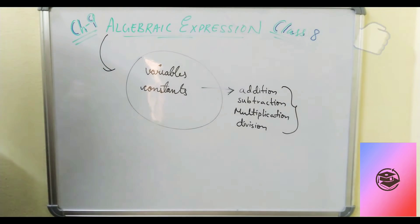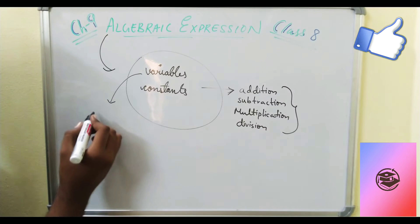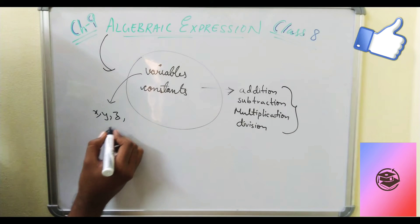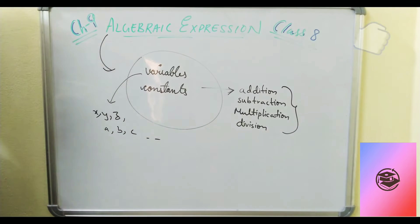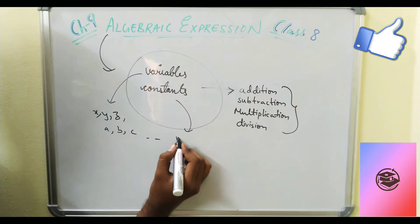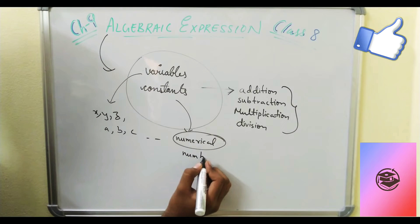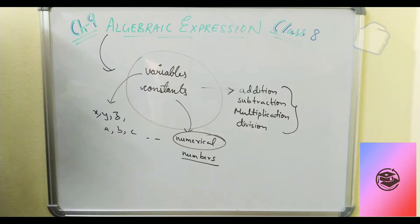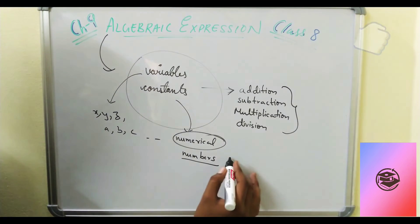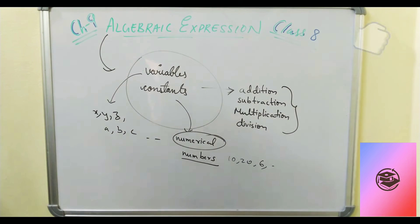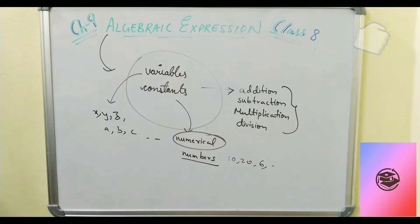Now, what do you understand by the word variable? Variables can be any alphabets — generally x is taken, y is taken, or any alphabets such as a, b, c. Constants are basically numerical numbers — any numbers from 0 to infinity, such as 0, 10, 20, 26, and so on. Even integers — any sort of numbers we can take.